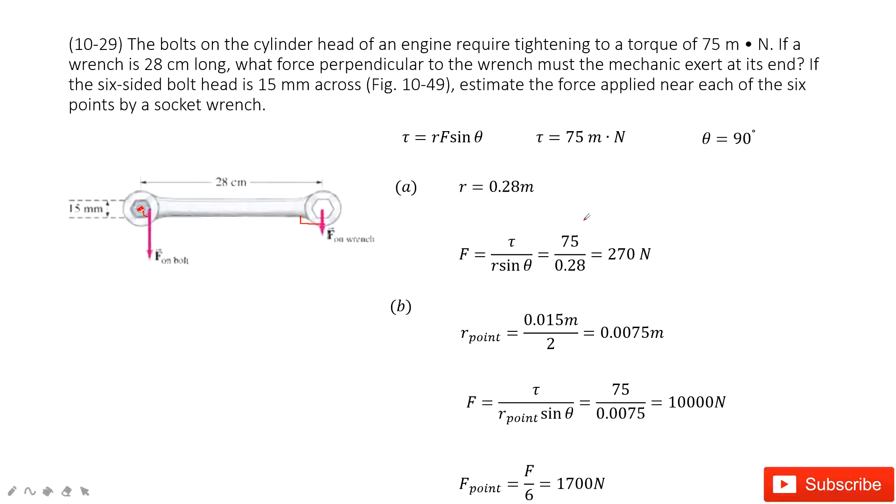And then, the first one, we need to find force at this end. First, we find distance from the fixed point to this force is 0.28 meters. So that means the torque equals rF sin θ. The torque is given, r is given, sin theta is given. Very easily, you can find this force.